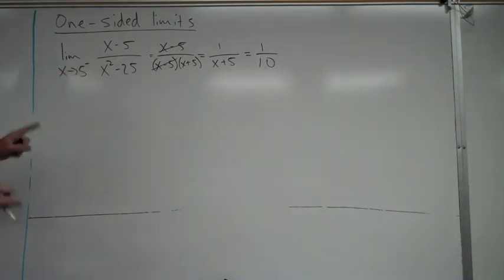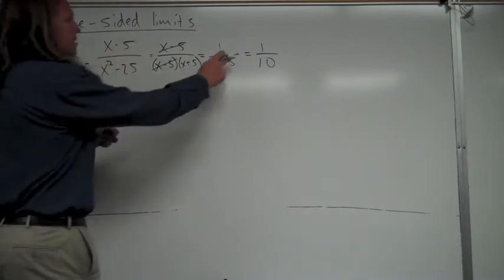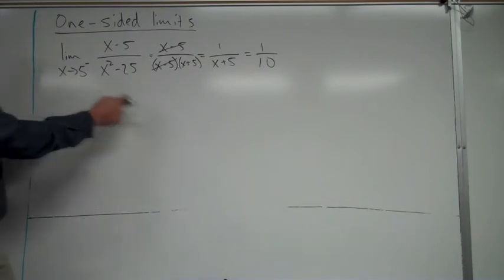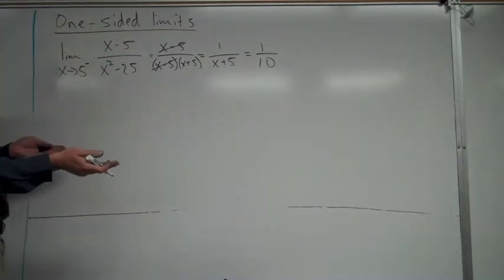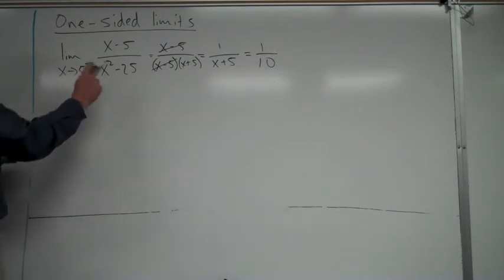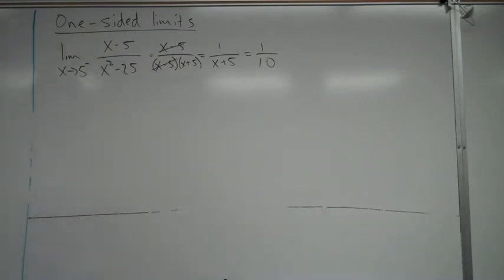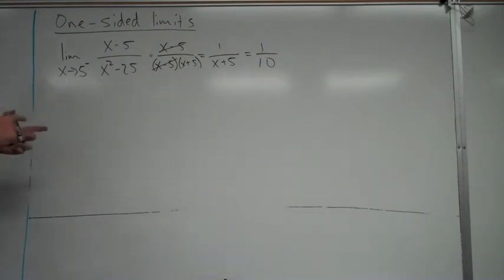Everything I just did was the same as if that negative sign wasn't there. Since I could go through the whole process and get 1 tenth using the regular limit as x approaches 5, I know the limit from the left is also 1 tenth. All of those rules we've learned still apply, and nothing changes for left or right-hand limits.